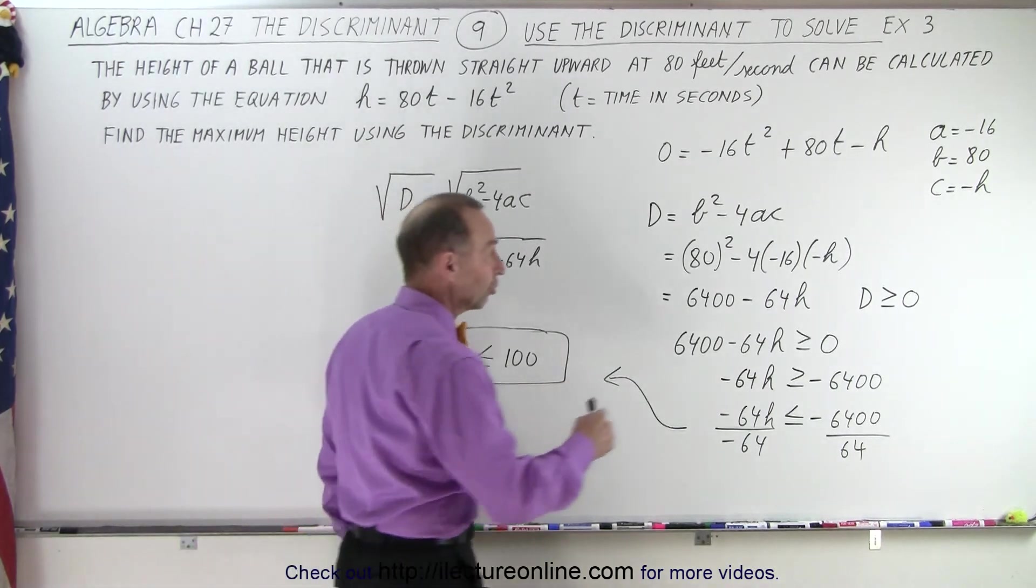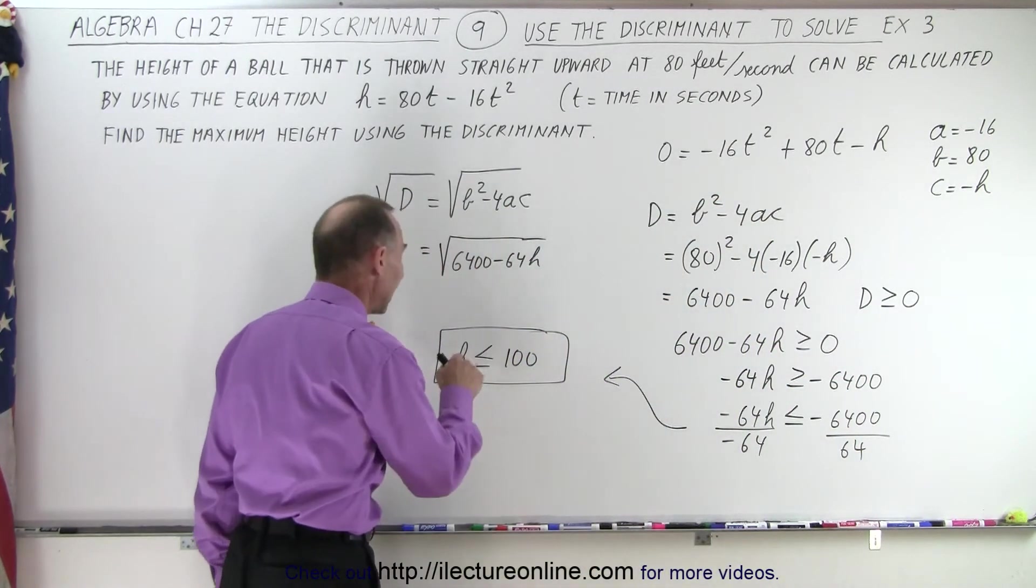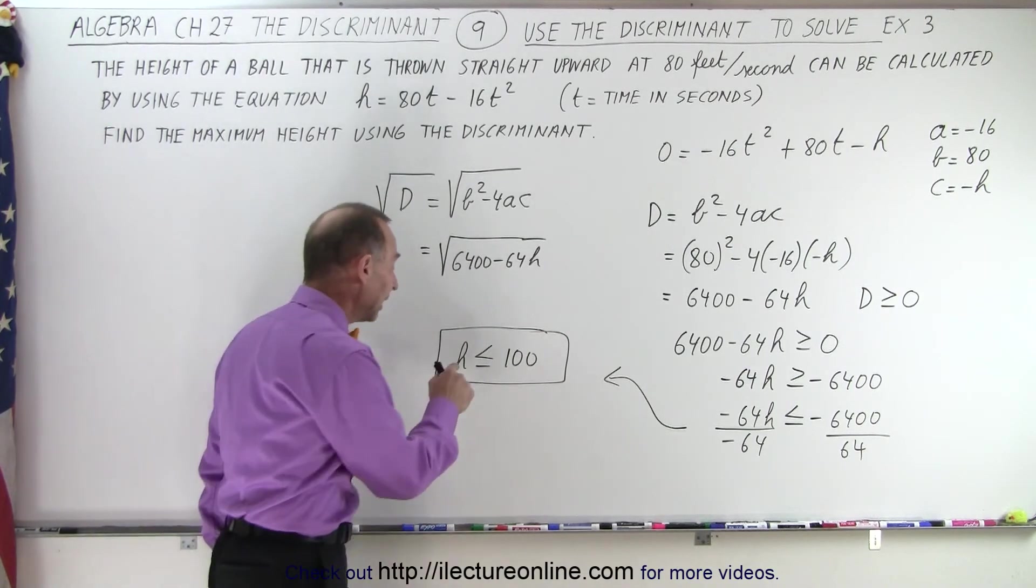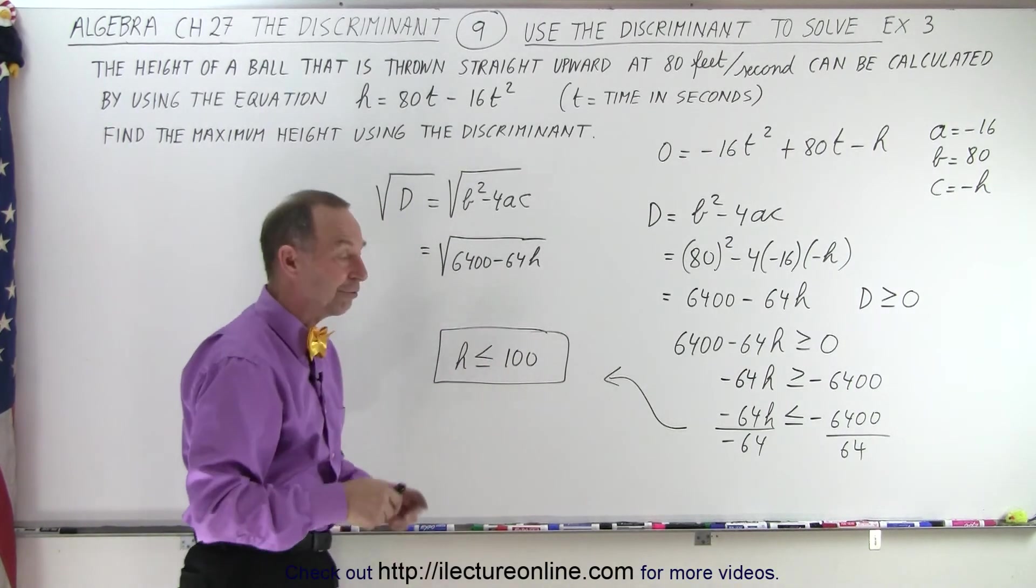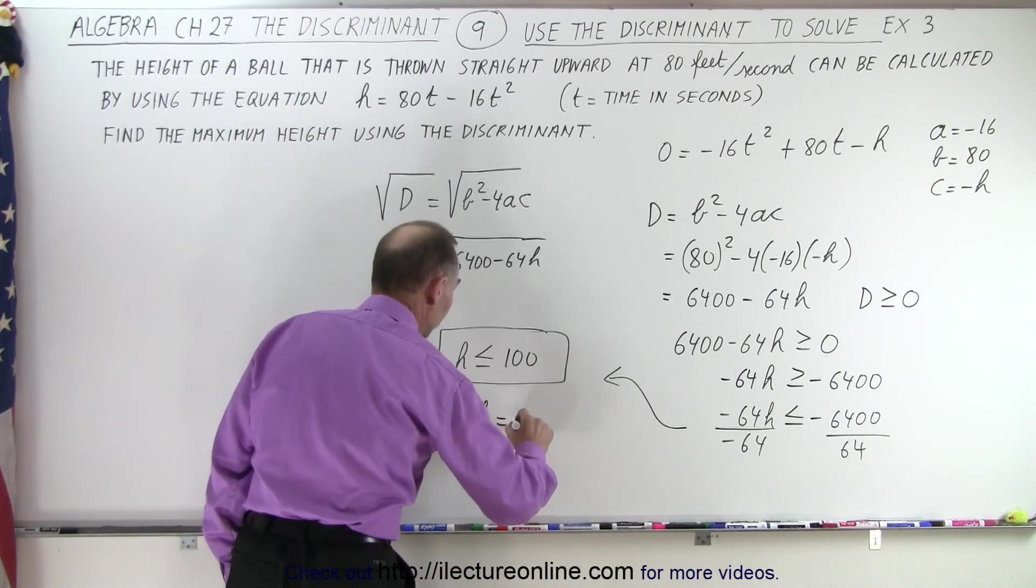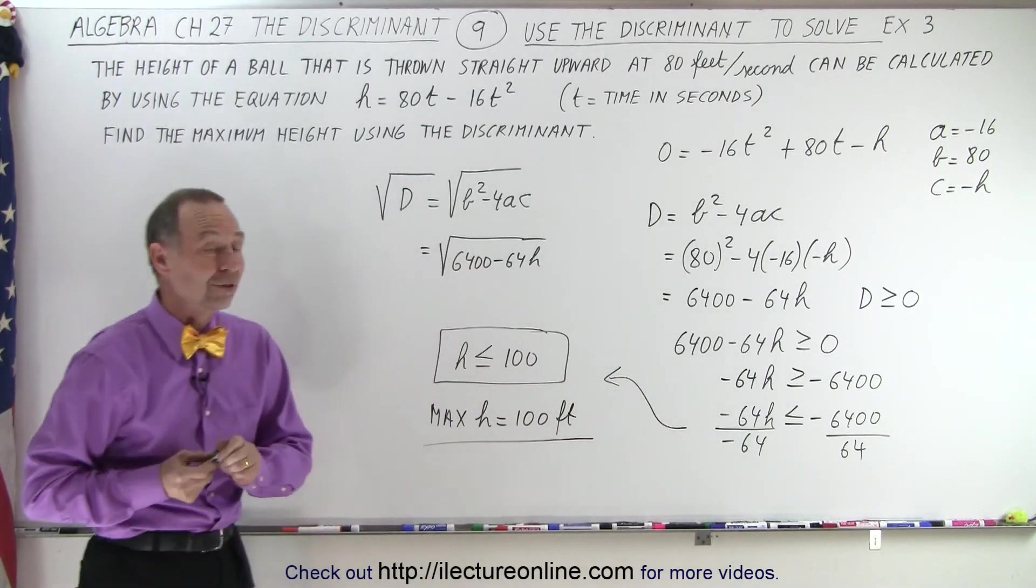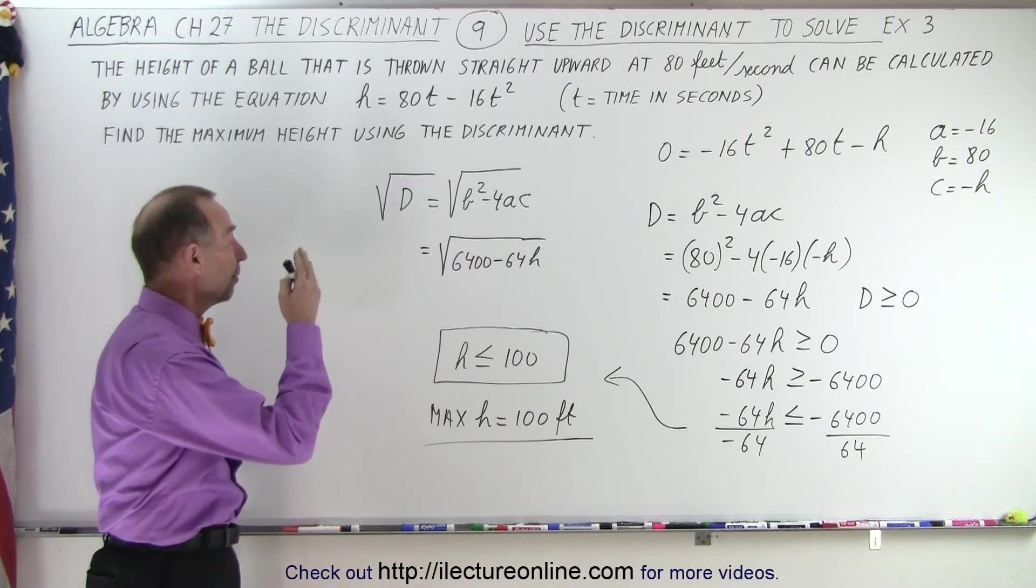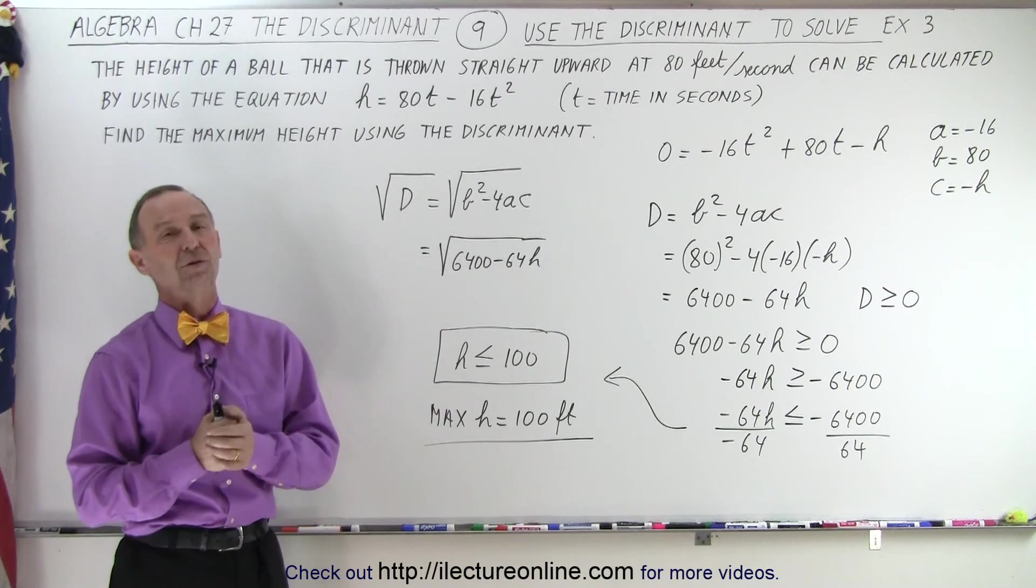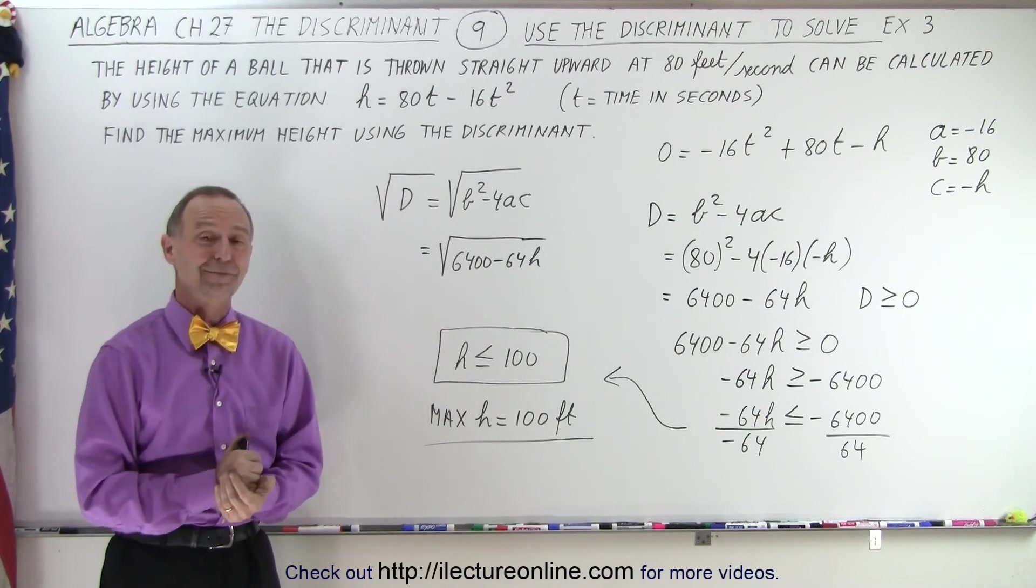The restriction is that for the discriminant to be greater than or equal to 0, it is necessary for the height to be less than or equal to 100. In other words, the maximum value that h can have is 100, so therefore the maximum height is equal to 100 feet. And that's how we can use the discriminant to determine the maximum height the ball will go simply by knowing the restrictions on the discriminant in that quadratic equation. And that is how it's done.